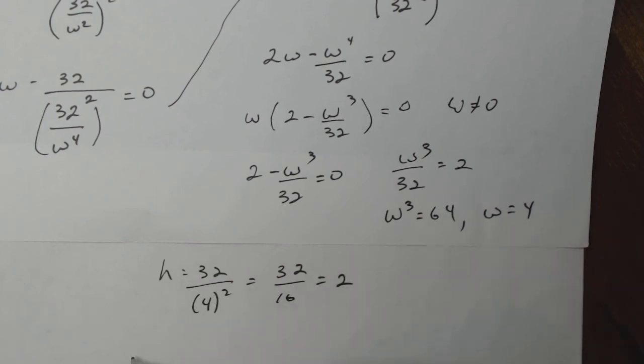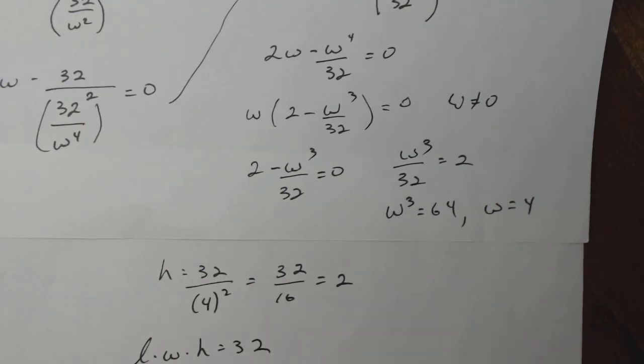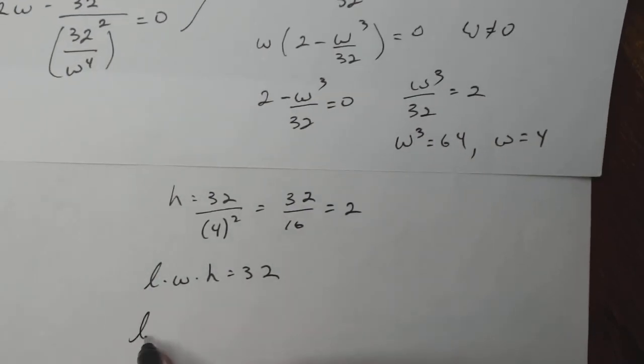If I go all the way back to the top, I know that length times width times height is supposed to be 32. So length times width times height is 32. Length is equal to 32 over eight, which is four. So my critical point turns out to be length four, width four, height two. And this is a local min occurs here.